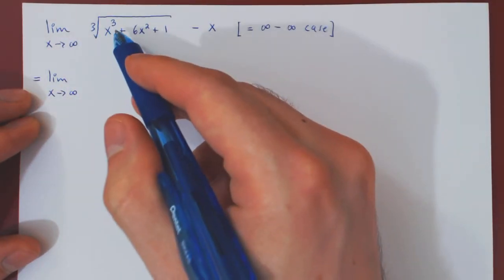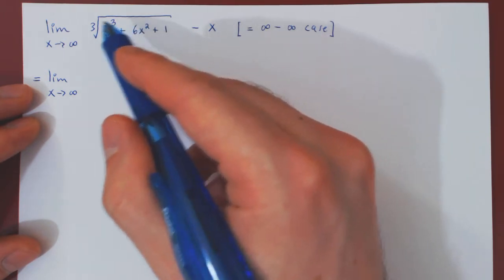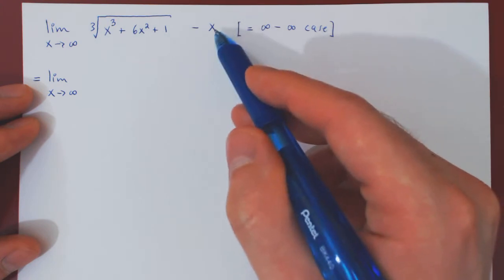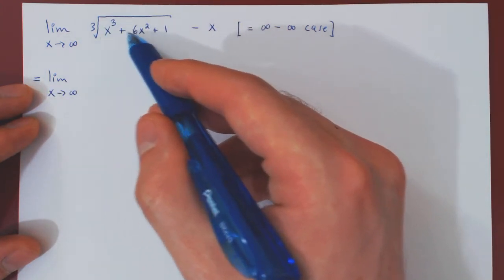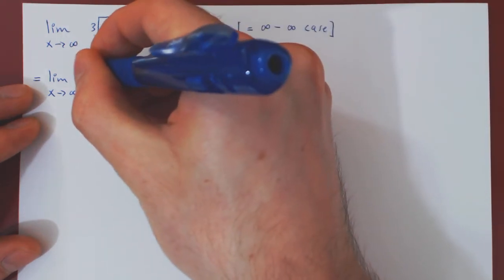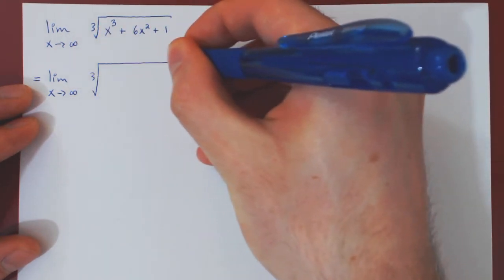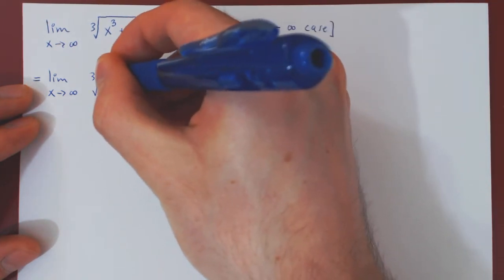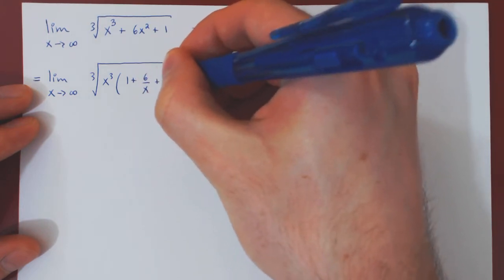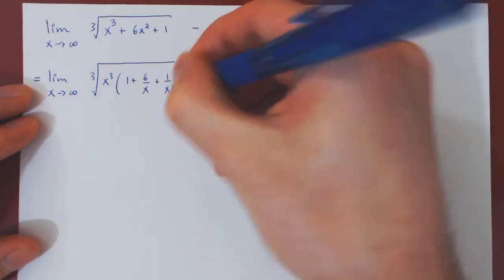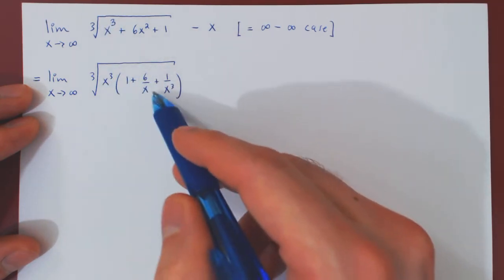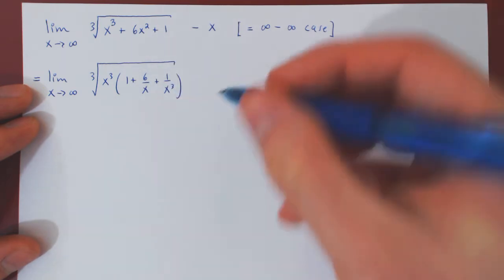The question is, how do we pull out an x from the cube root? Well, the cube root of what is an x? The cube root of x cubed. So we want to factor from the argument of our cube root an x cubed. If we factor x cubed, we're left with 1 plus 6 over x plus 1 over x cubed. You can verify by multiplying through: x cubed times 1 is x cubed, x cubed over x is x squared, x cubed over x cubed is 1.